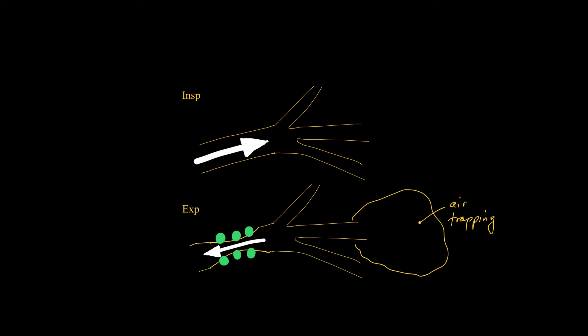This is an example of air trapping within a secondary pulmonary lobule. The centre of the lobule contains a central bronchus and a pulmonary artery. The pulmonary artery undergoes vasoconstriction because of the hypoxic environment created by air trapping. That is very common.